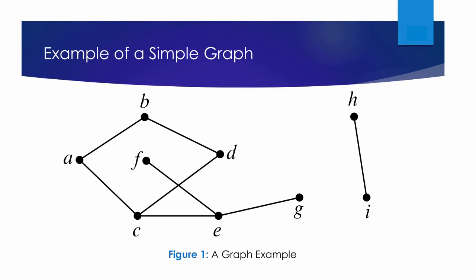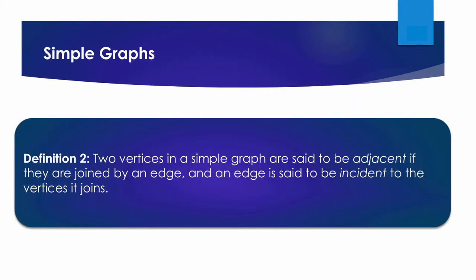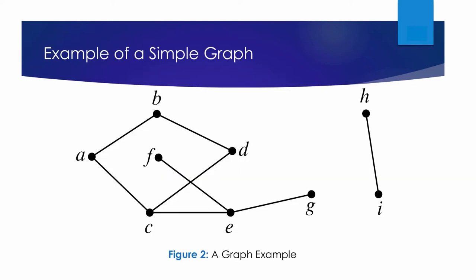The second definition describes adjacency in simple graphs. Two vertices in a simple graph are said to be adjacent if they are joined by an edge, and an edge is said to be incident to the vertices it joins. The number of edges incident to a vertex V is called the degree of the vertex, denoted by the function degree(V). The degree of a vertex equals the number of vertices it is adjacent to.